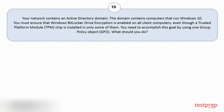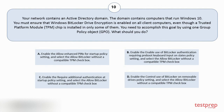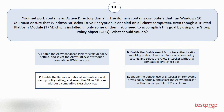Question number ten. Your network contains an Active Directory domain. The domain contains computers that run Windows 10. You must ensure that Windows BitLocker Drive Encryption is enabled on all client computers, even though a trusted platform module chip is installed in only some of them. You need to accomplish this goal by using one group policy object. What should you do? Options: A. Enable the allow enhanced pins for startup policy setting and select the allow BitLocker without a compatible TPM checkbox. B. Enable the enable use of BitLocker authentication requiring pre-boot keyboard input on Slates policy setting and select the allow BitLocker without a compatible TPM checkbox. C. Enable the require additional authentication at startup policy setting and select the allow BitLocker without a compatible TPM checkbox. D. Enable the control use of BitLocker on removable drives policy setting and select the allow BitLocker without a compatible TPM checkbox. The correct answer is option C.